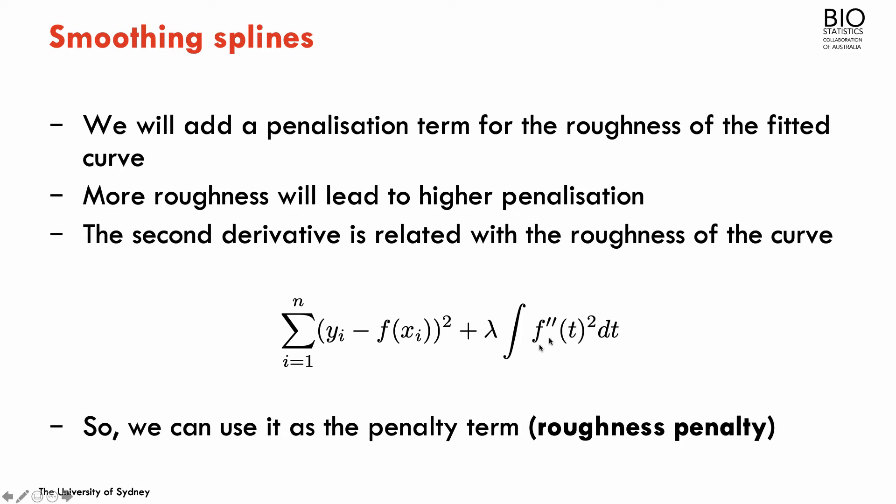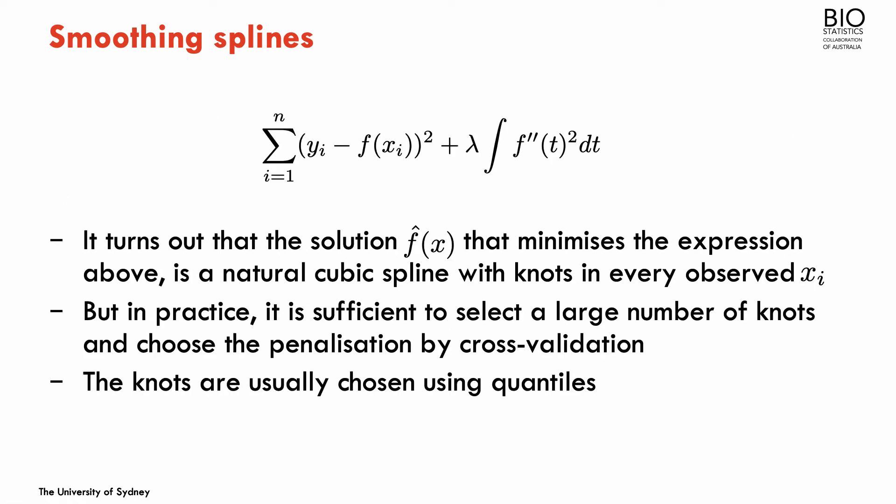This penalty term is going to be called the roughness penalty. It turns out that there's a very nice theoretical result that shows that the solution, the estimate for f(x), is a natural cubic spline with knots in every observed value of the predictor. There's actually a closed form solution for this problem.